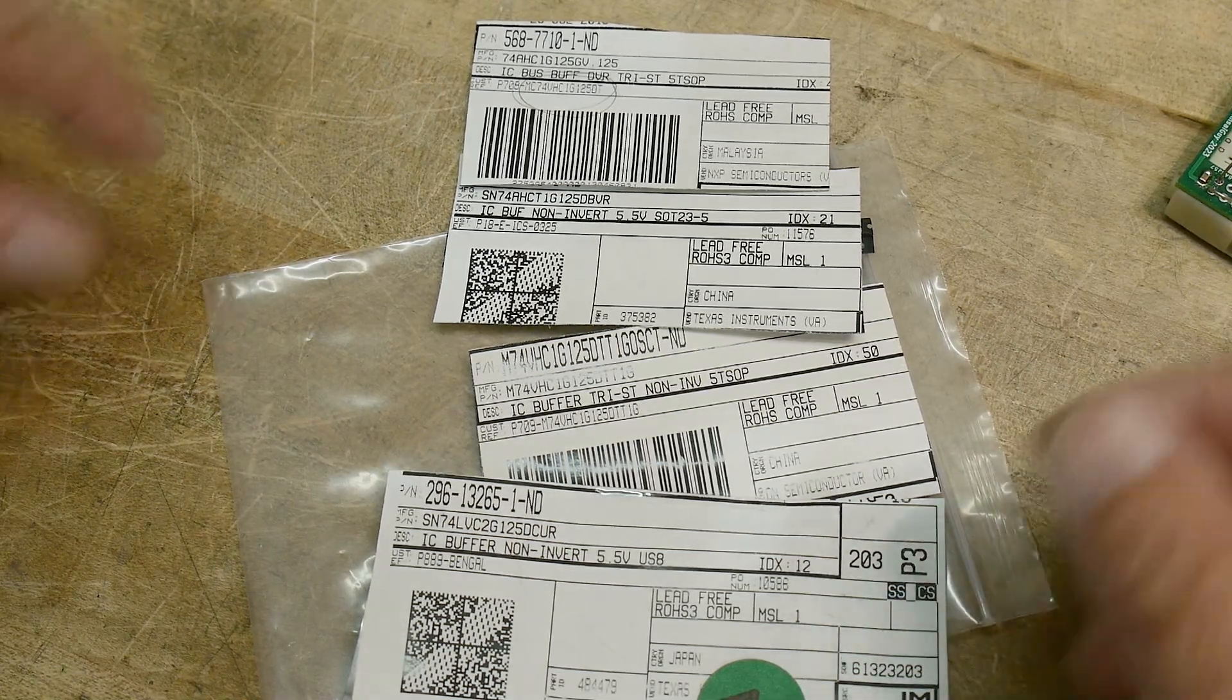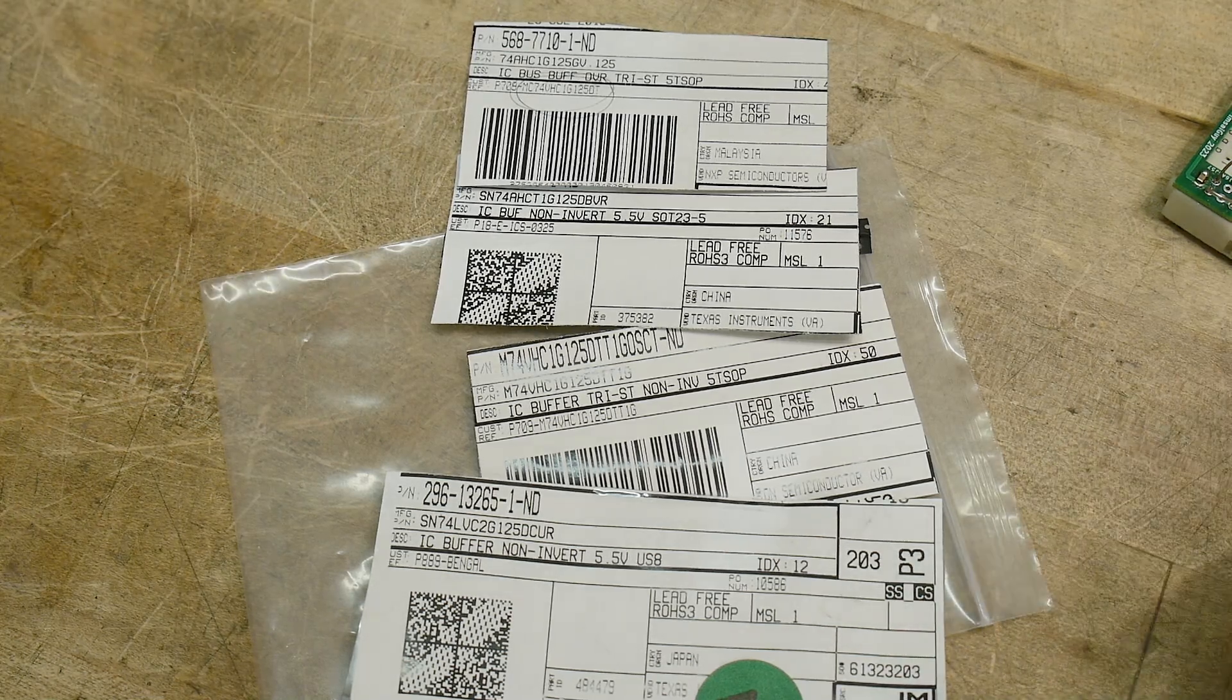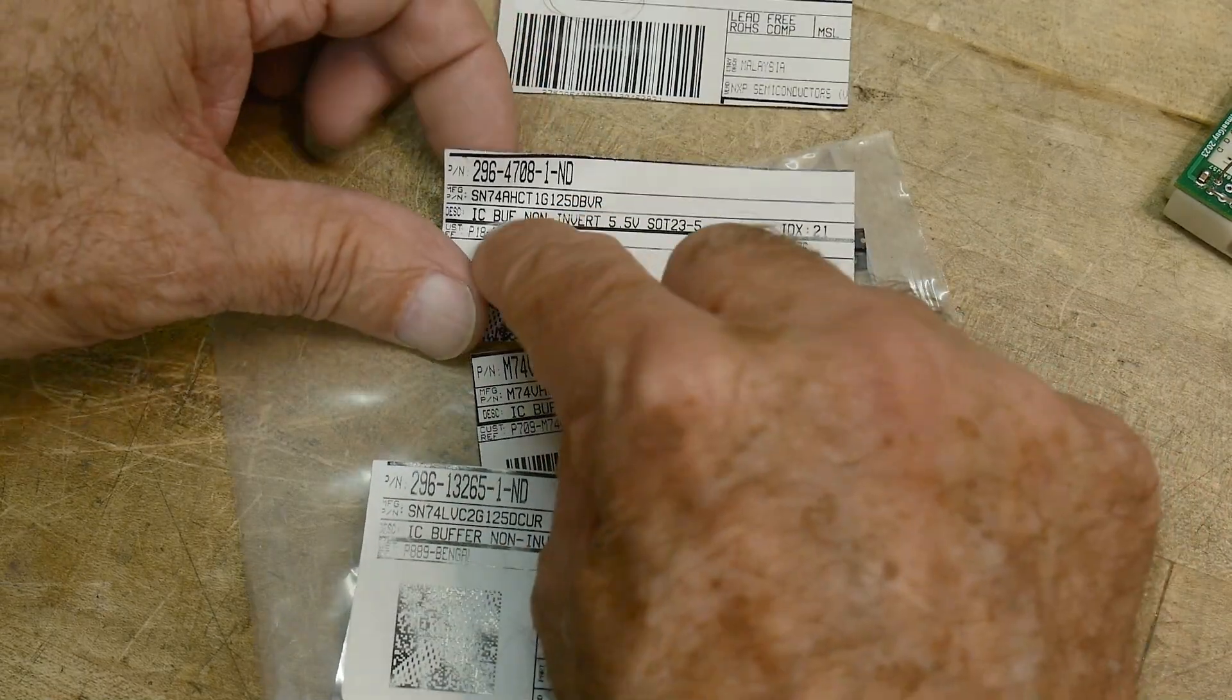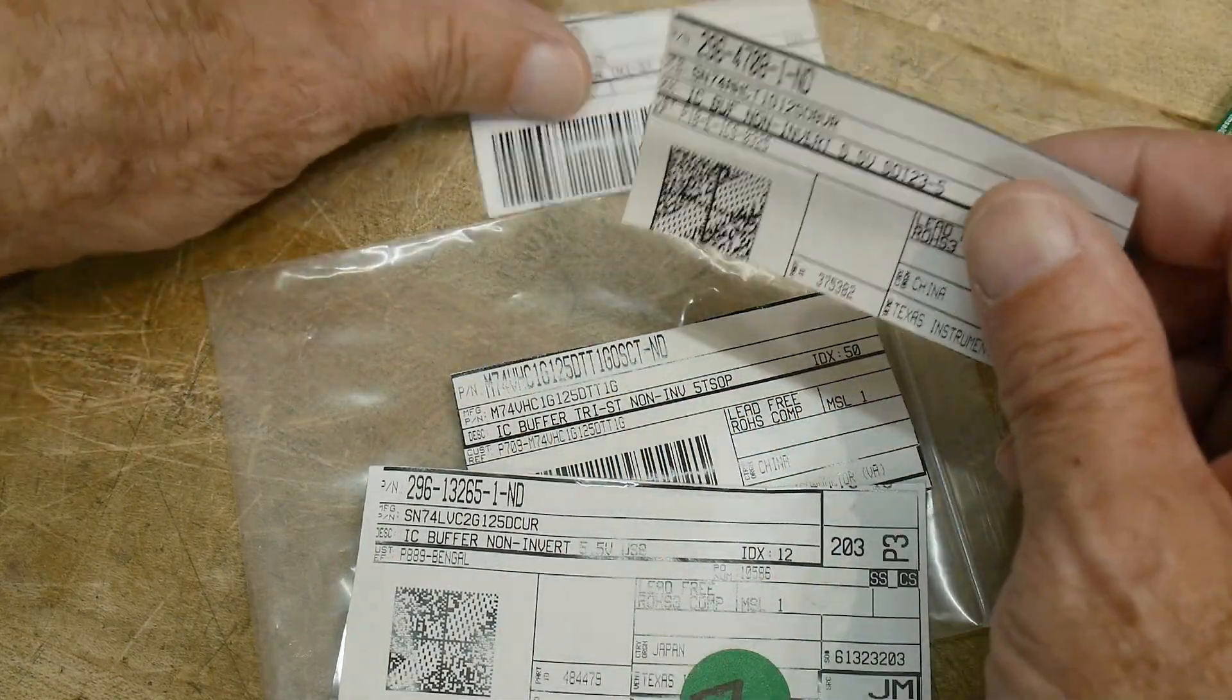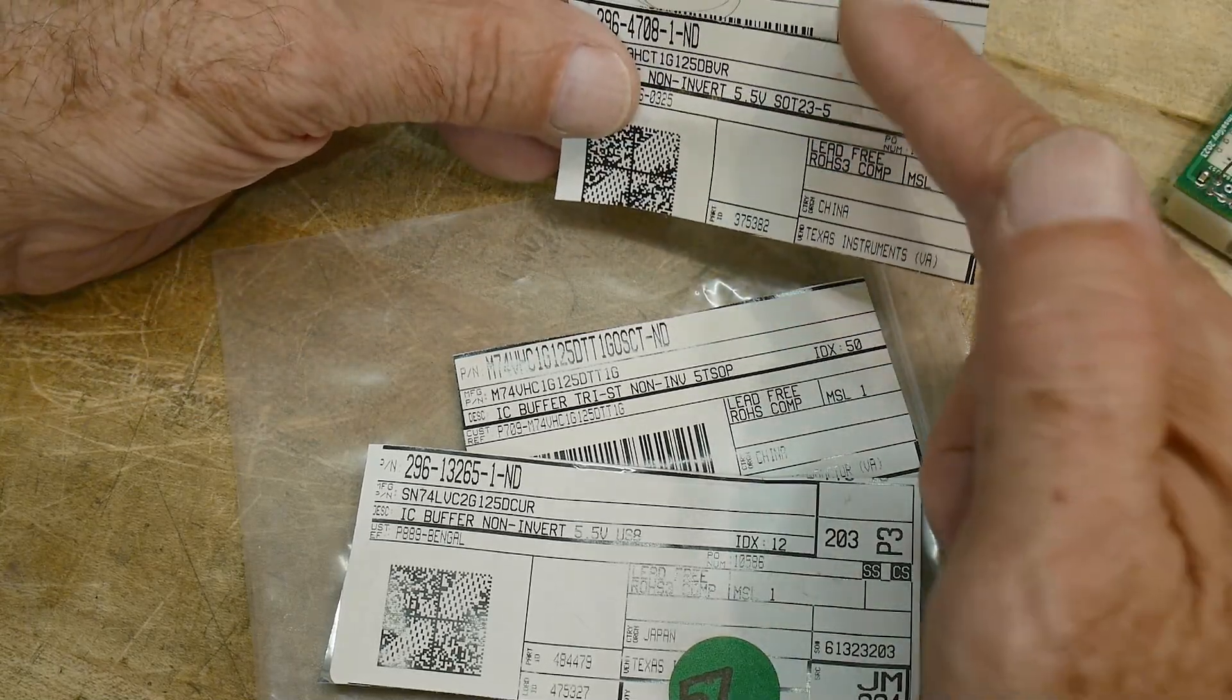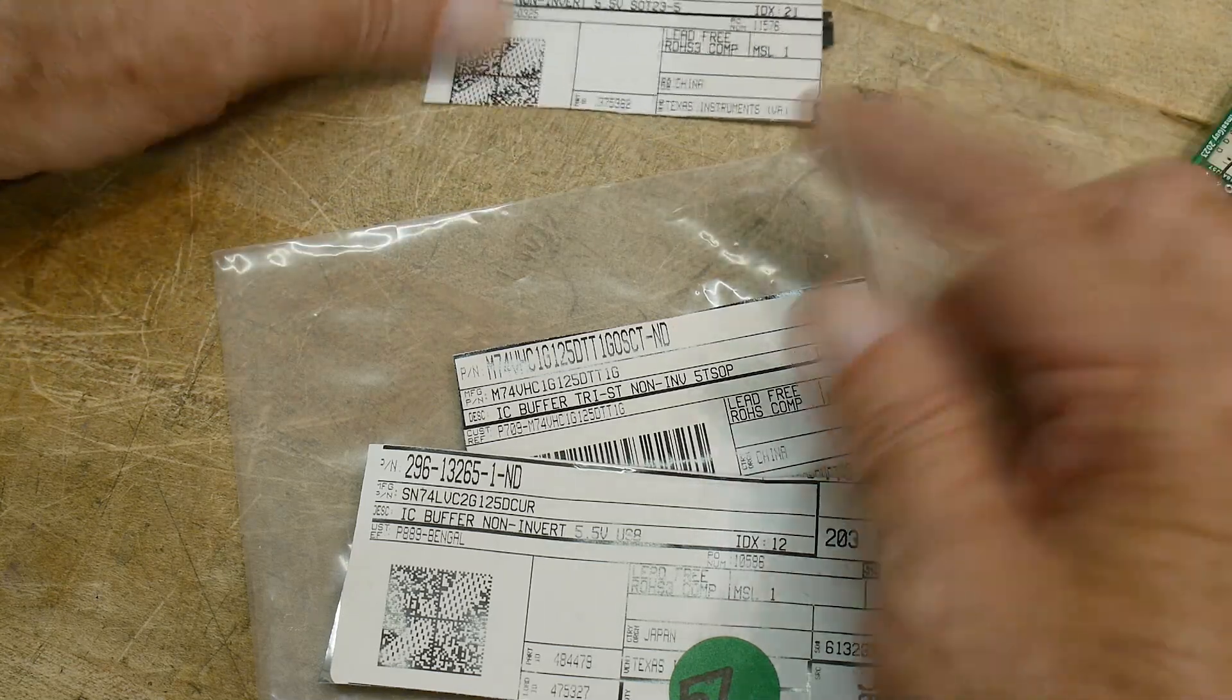This guy must have been doing that because these are all 74 125s, which is a tri-state buffer, but all different flavors. He has an AHC and AHCT. The difference between these is the T means that it is TTL compatible inputs, and the other one is CMOS levels. So this one's TTL levels, that one's CMOS levels.